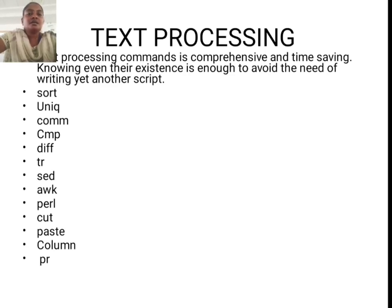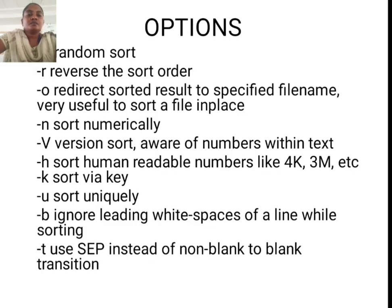Short Unix command prompt: diff, diff-set, awk, perl, cut, paste, column. Sort options include: random sort or reverse the sort order; redirect sort result to a specified file name — very useful to sort your file in place. Sort numerically; version sort, aware of numbers within text; sort human-readable numbers like 4K, 3M, etc.; sort uniquely; ignore leading white spaces while sorting; use separator instead of non-blank to blank transition.